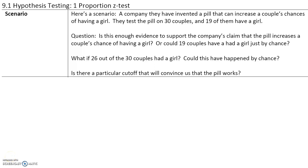In section 9.1 we will be introduced to hypothesis testing. Here's a scenario: a company says that they have invented a pill that can increase a couple's chances of having a girl. To test this, they take 30 couples who volunteer, and out of the 30 couples, 19 of them have a girl. Is this enough evidence to support the company's claim that the pill increases a couple's chance of having a girl, or could the 19 couples have had a girl just by chance?